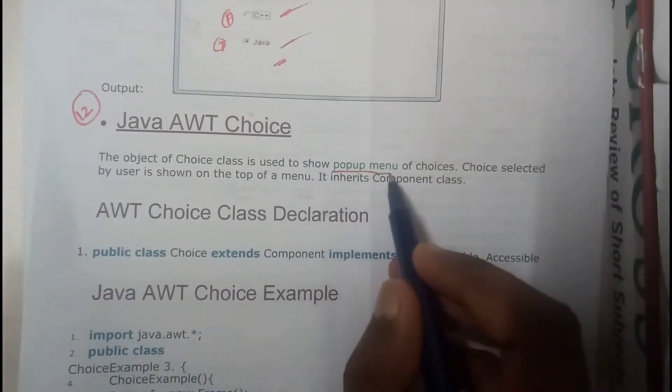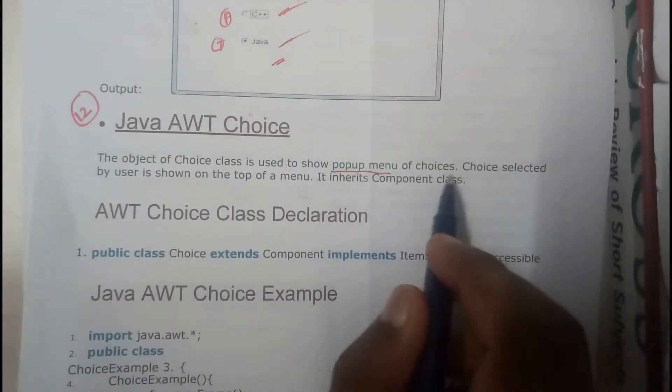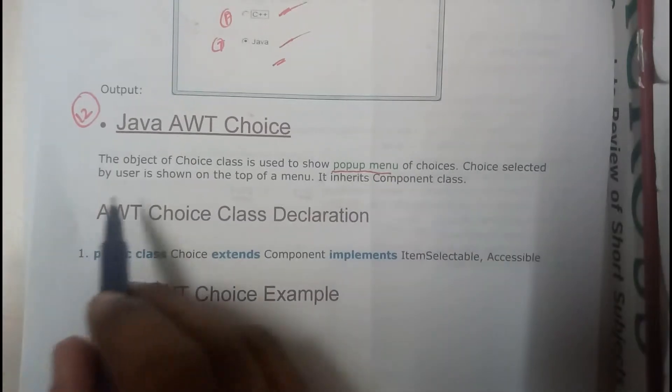The object of Choice class is used to show the pop-up menu of choices. The choice selected by the user shows on the top of the menu. It inherits Component class.